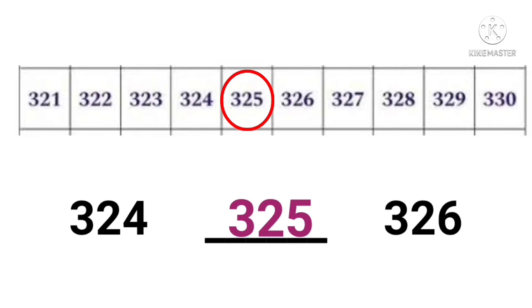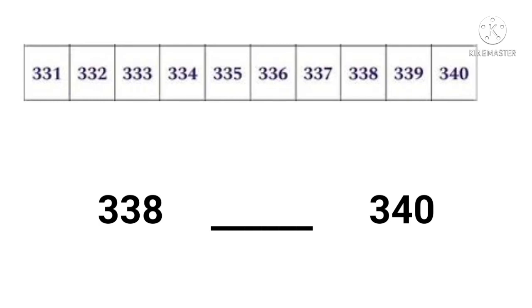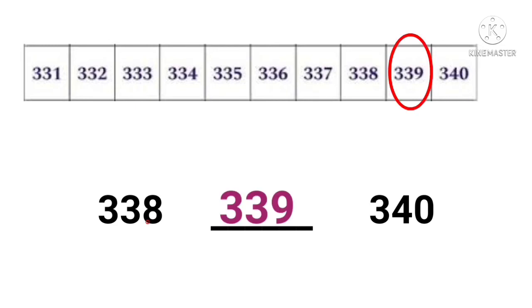Very good. Now the next one: what number comes in between three hundred and thirty-eight and three hundred and forty? Yes, it is three hundred and thirty-nine.